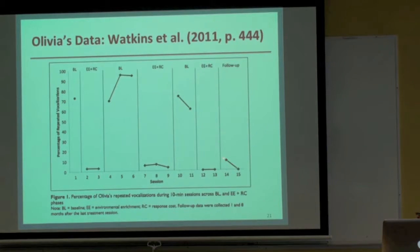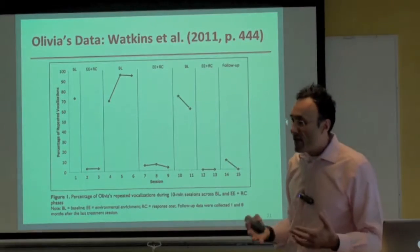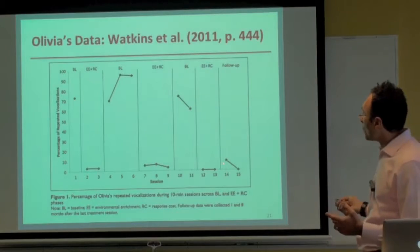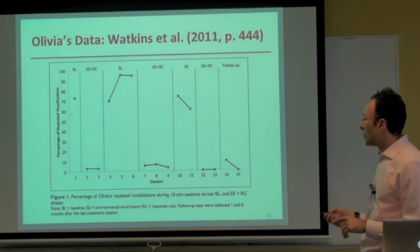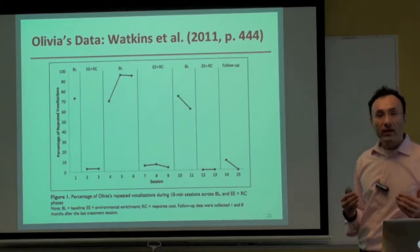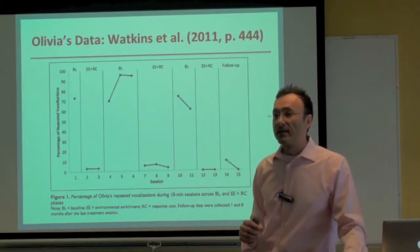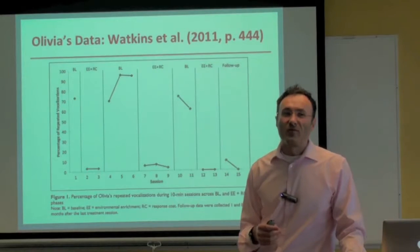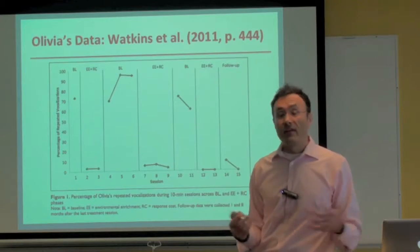We did an 8-month and 12-month follow-up, and by a year afterwards the behaviors were happening at zero with no booster sessions. The length of time between session 1 and session 13 was one week. At the end of session 13, Olivia said something like: 'I don't want to repeat myself anymore. This is kind of silly. I'm going to stop.' And that was pretty much the end of it.